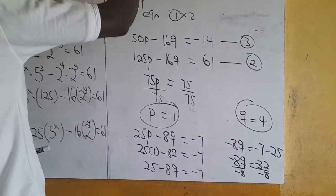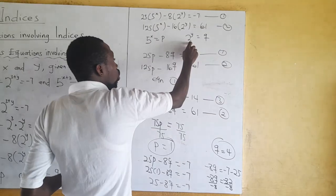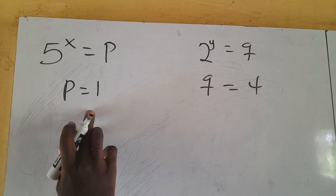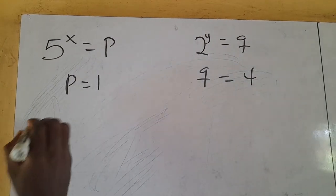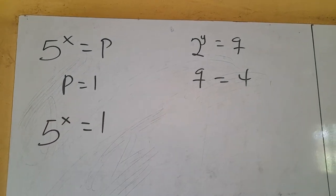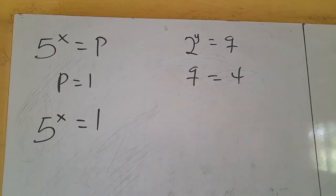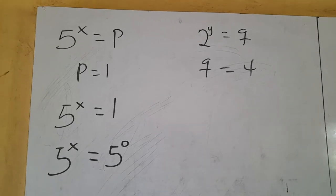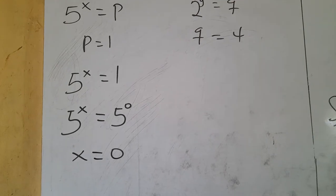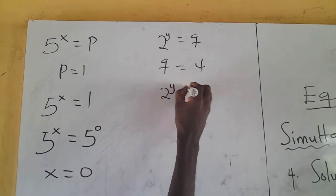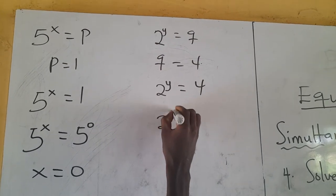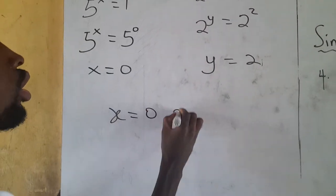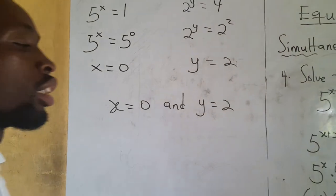Now I know p equals 1 and q equals 4. Since p equals 5 exponent x and q equals 2 exponent y, I substitute them. For p: 5 exponent x equals 1. Using the property that any number to the power 0 is 1, we get 5 exponent x equals 5 exponent 0, so x equals 0. For q: 2 exponent y equals 4, which is 2 exponent 2, so y equals 2. Our x is 0 and our y is 2.